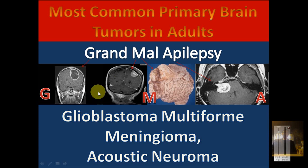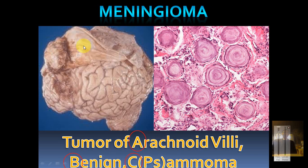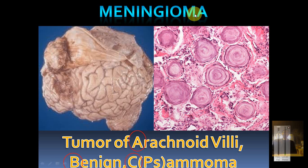Now let's discuss meningioma. On gross image, you can see the meninges compressing the brain tissue. There are three key things to remember for meningioma on the USMLE: first, it is a tumor of the arachnoid villi; second, it is a benign tumor; and third, it has psammoma bodies — lamellar structures seen microscopically. Psammoma bodies are found in very few tumors, most notably meningioma and papillary thyroid carcinoma.